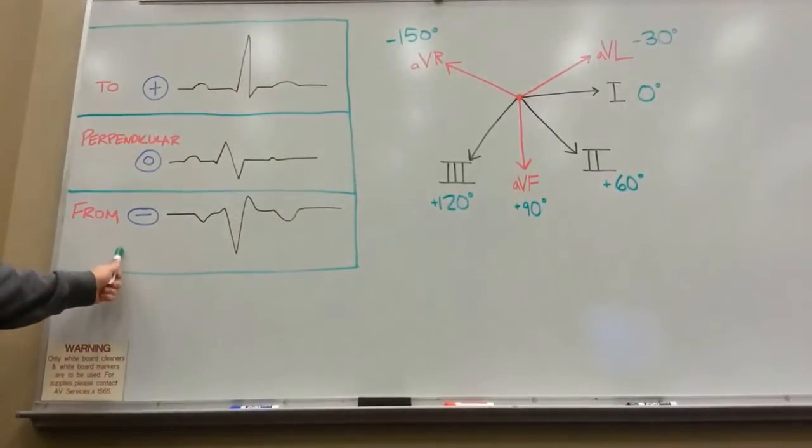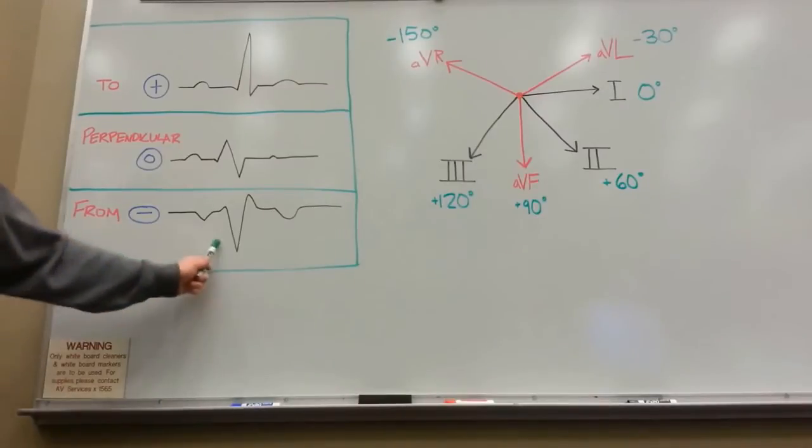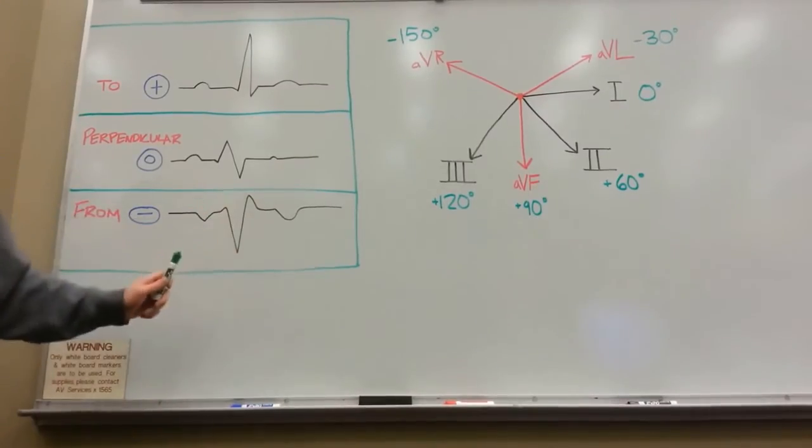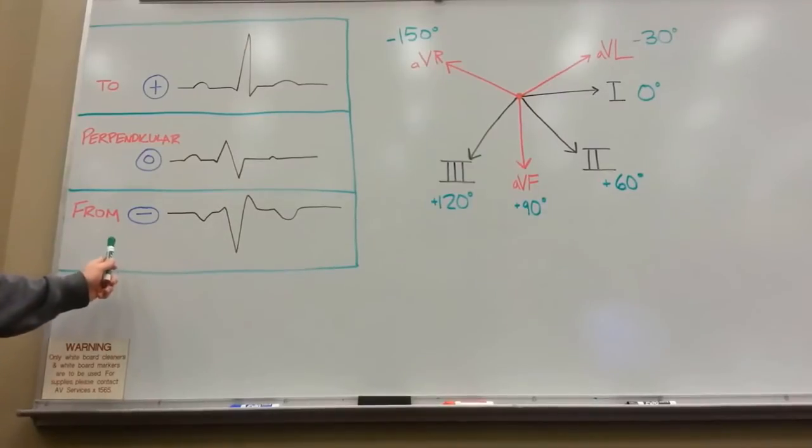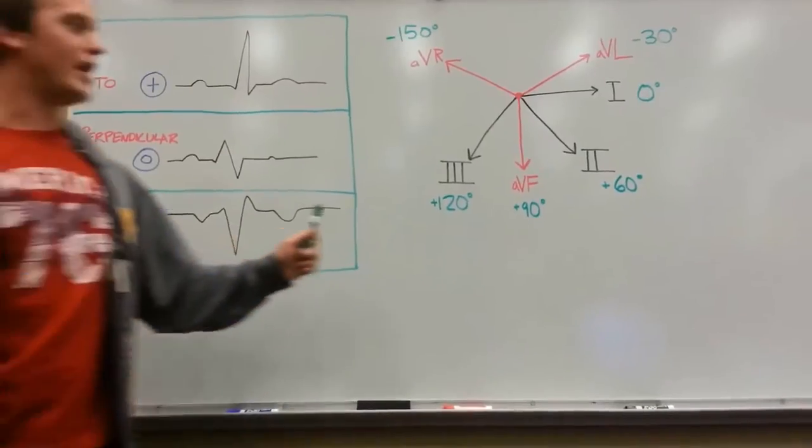Lastly, if your ECG reading for one of these nodes is negative, has a negative deflection, which is shown here, it's much more negative or below the baseline than it is positive, you'll know that your mean electrical axis is traveling away from that lead.